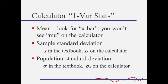But to find the mean, you want to look for x bar. You won't actually see the letter mu on the calculator. But you will see two standard deviations because again, those calculations are different. They are not the same number. So the sample standard deviation is marked as s in the textbook, but it's marked as sx on the calculator. The population standard deviation is marked as sigma, but it's marked as sigma x on the calculator.